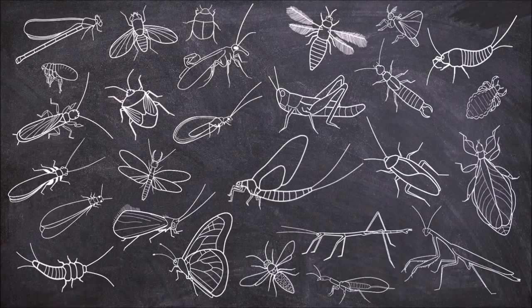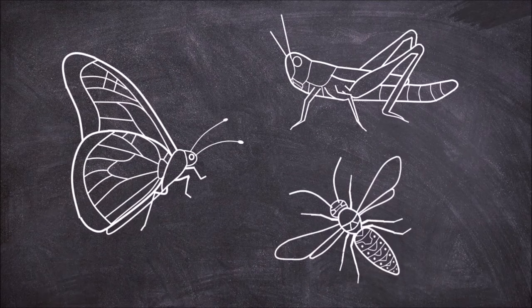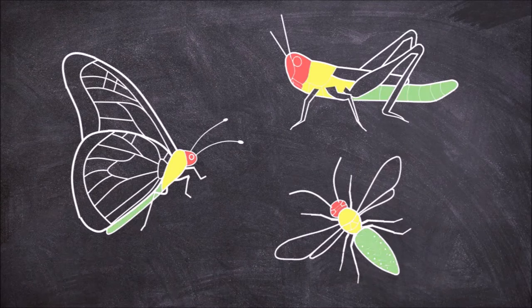In this video we are going to take a look at some of the characteristics that define the different insect orders. All insects consist of the same basic anatomy — they all possess three body segments: the head, the thorax and the abdomen, and adult insects all possess three pairs of legs.